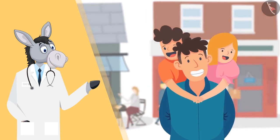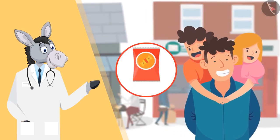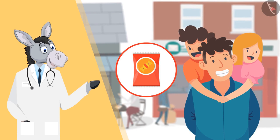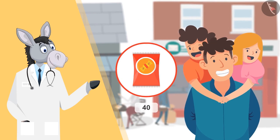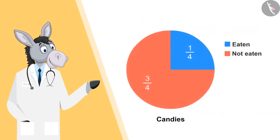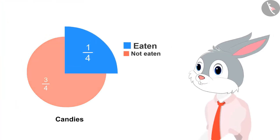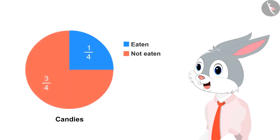Father of Bhimla and Chandu has bought a packet of candy. It contains forty candies. Now, look at this pie chart to find out how many candies have been eaten by the kids. They ate one by four, that is one-fourth of the candies.